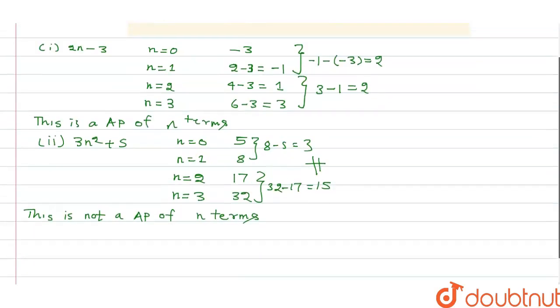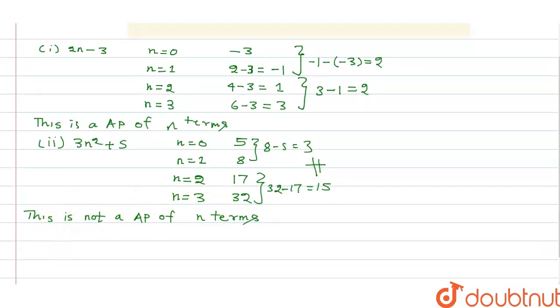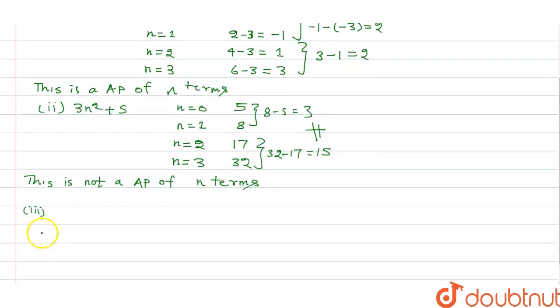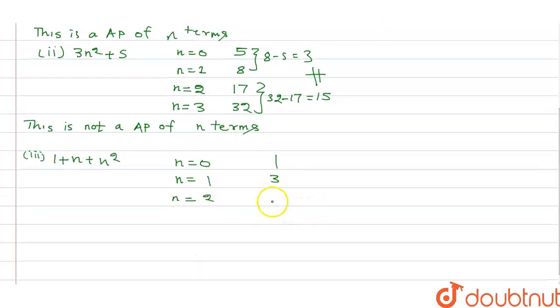Now for the third one, 1 plus n plus n squared. For n equals 0, what we get, 1. For n equals 1, we get 3. For n equals 2, what we get, 1 plus 2 plus 4, that is equal to 7.